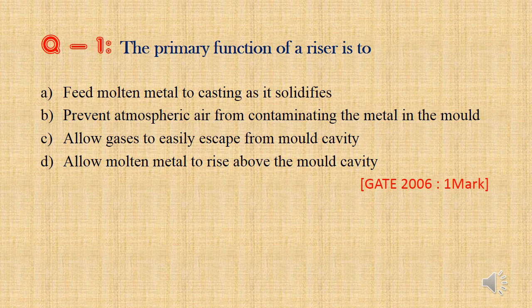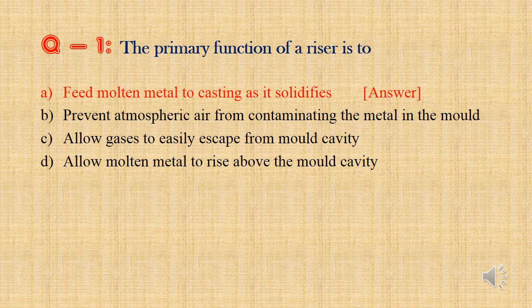Now we can see some previous GATE questions. Question 1: The primary function of a riser is to — Option A: Feed molten metal to casting as it solidifies. Option B: Prevent atmospheric air from contaminating the metal in the mold. Option C: Allow gases to easily escape from mold cavity. Option D: Allow molten metal to rise above the mold cavity. The riser is a molten metal reservoir which feeds molten metal into the mold when it solidifies. So the answer is Option A: Feed molten metal to casting as it solidifies.